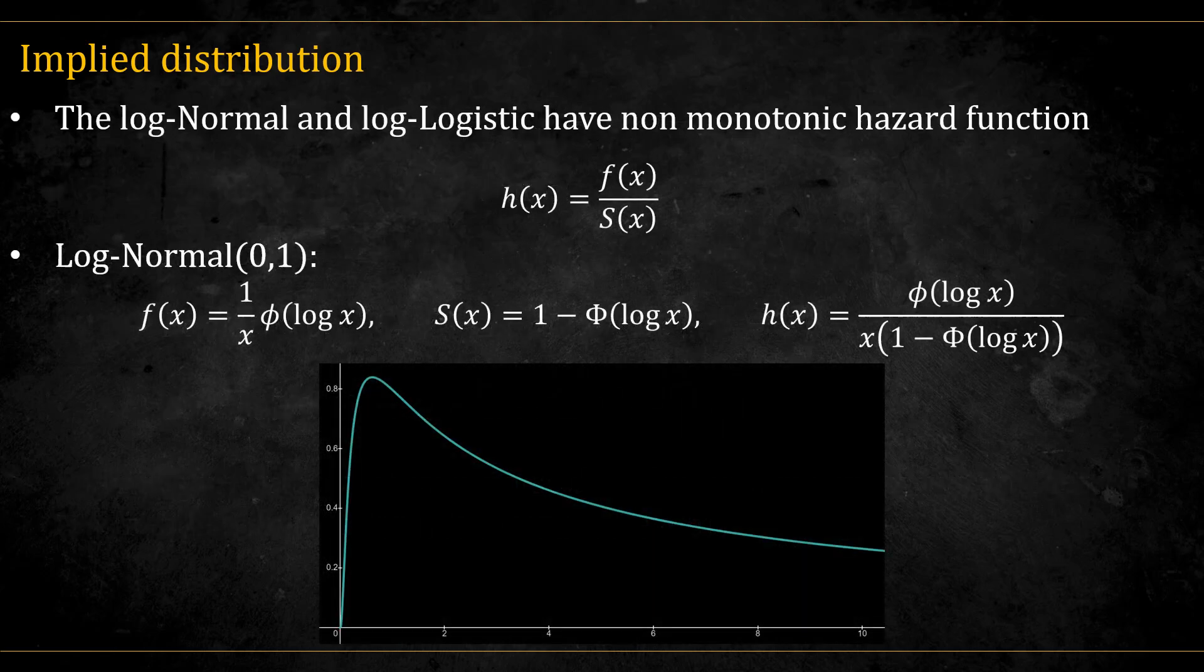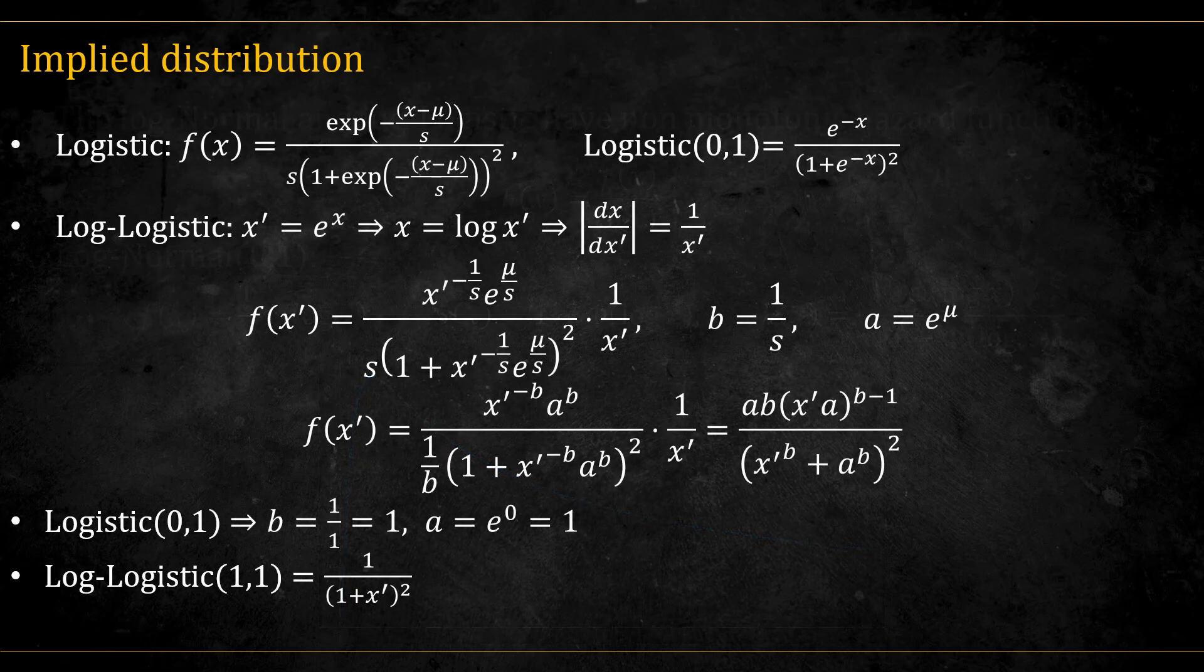The log normal and log logistic can have non-monotonic hazard functions. For example, remembering that the hazard is the PDF divided by the survival function, here we can see the plot of the hazard of the log normal distribution with parameters 0 and 1, where little phi is the PDF of the standard normal distribution and big phi is the CDF. Notice it first goes up and then goes down. This could make sense in some scenarios, but maybe not in others, where we expect the hazard to be monotonically increasing.